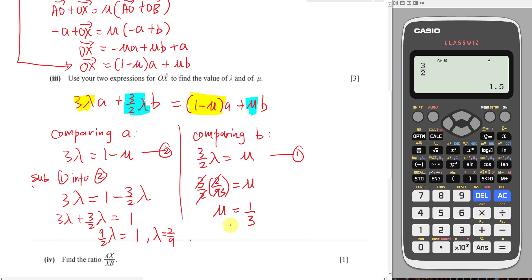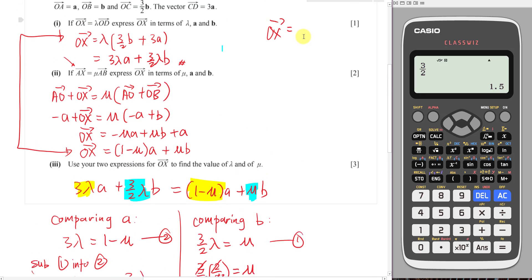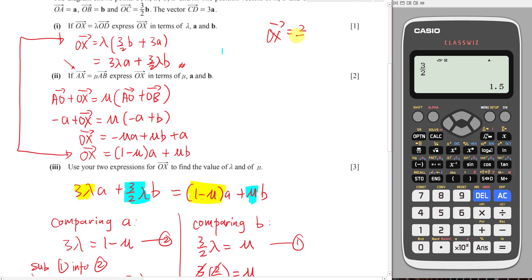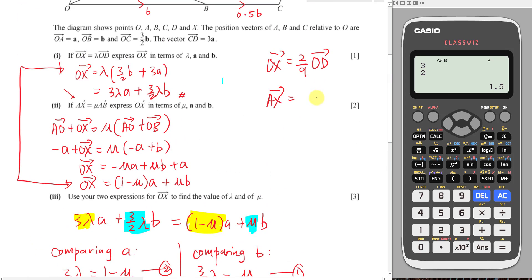After I got the lambda and mu, normally I prefer to sub back to the equation. So if I sub back into here, OX equals, what is the lambda again? 2 over 9, so 2 over 9 of OD. Then the next one is AX equals mu is 1 over 3, then 1 over 3 of AB. This is what happened, I sub back.